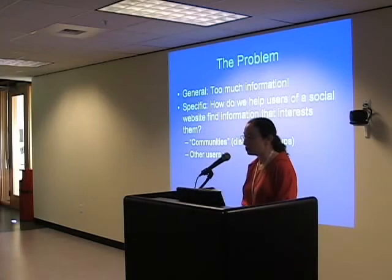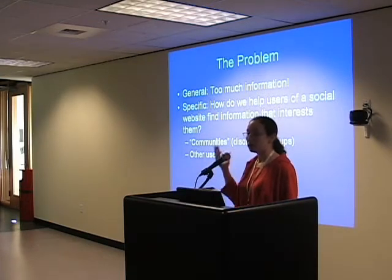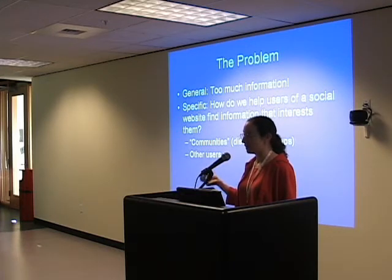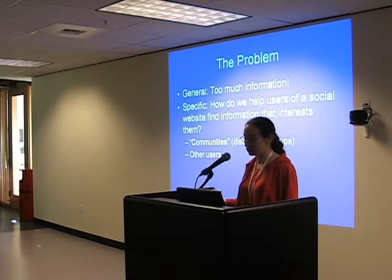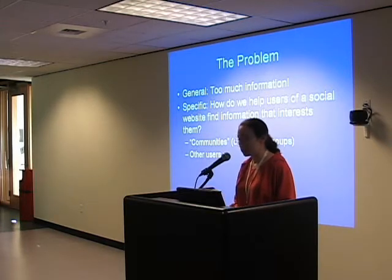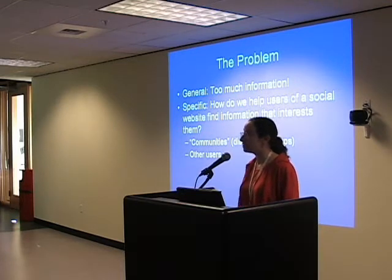One of the main problems of computer science is that there's too much information out there. The amount of information grows exponentially, at least, but our ability to handle information doesn't. The specific problem I looked at is how do we help users of a social website find information that interests them?